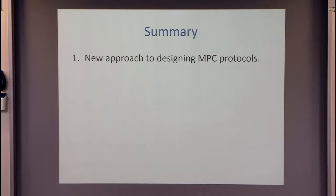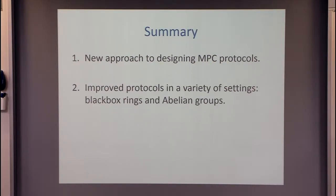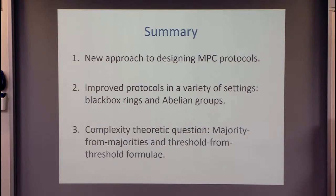To summarize: we suggest a new approach, which I think is conceptually appealing, to designing MPC protocols. It works in a large variety of settings. In particular, for underlying algebraic structures such as rings or abelian groups, we get key results that improve upon the state of the art. There is also a seemingly independent complexity-theoretic open question: can you fully derandomize Valiant's construction? We've made a lot of progress but it remains open. If you're interested, I'm happy to discuss more offline.